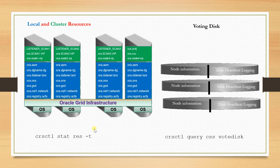Coming to Voting Disk — Voting Disk will be my actual ASM disks. I will be having a mirrored copy of my Voting Disk. Oracle recommends having an odd number of voting disks like 3, 5, or 7. I already covered why we need an odd number of voting disks. If somebody missed it, please go back to my YouTube channel and search for that.